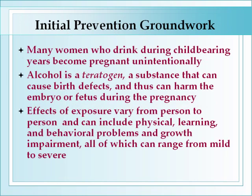One necessary step to address FASDs is prevention, which relies on delivering up-to-date and accurate information. It starts with informing women of childbearing age that many who drink during those years become pregnant unintentionally. Second, that alcohol is a teratogen — a substance with the capacity to cause birth defects and harm the embryo or fetus during development. Third, effects of alcohol exposure can vary widely from person to person, or even from pregnancy to pregnancy in the same mother, and can include physical problems, learning difficulties, behavioral problems, and growth impairment — all ranging from mild to severe.